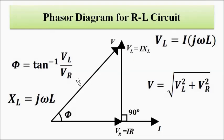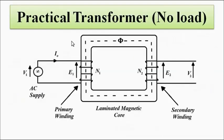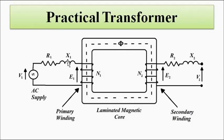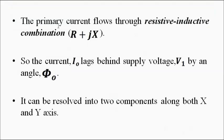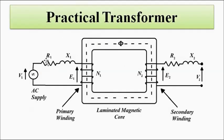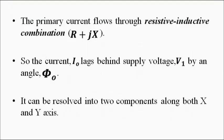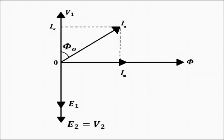The same behavior occurs in the practical transformer at the primary side, where we visualize R1 and X1 as the RL circuit. The primary current I₀ flowing through this resistive-inductive combination R1 + jX1 will lag behind the supply voltage V1 by angle φ₀, where φ₀ is between 0 and 90 degrees.